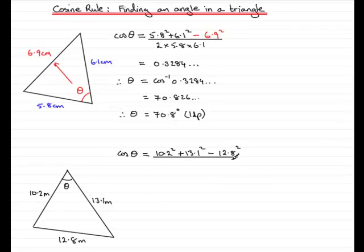Divide all of this result by two times the product of these two sides that surround the angle, so two times 10.2 times 13.1. Now, just work this out on your calculator, and you should get 0.4183 and so on. Inverse cos both sides.